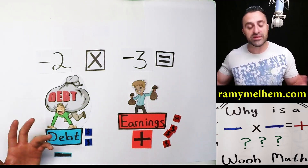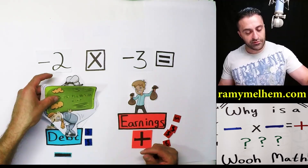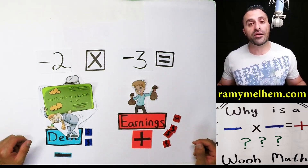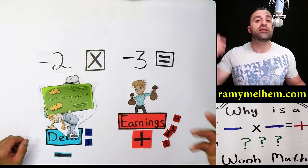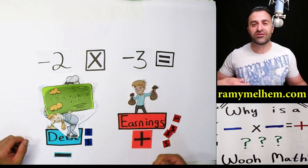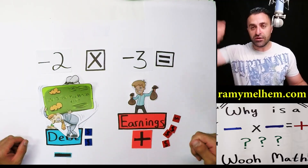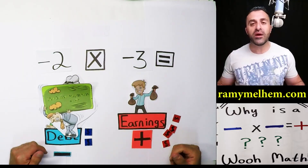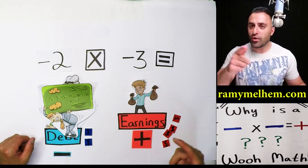Say you see a nice pair of shoes. You pull out your credit card because you don't want to pay cash, swipe the card, and take the shoes home. Guess who paid for that? It wasn't you — it was the bank or the credit card company. Now you've got to pay them back.